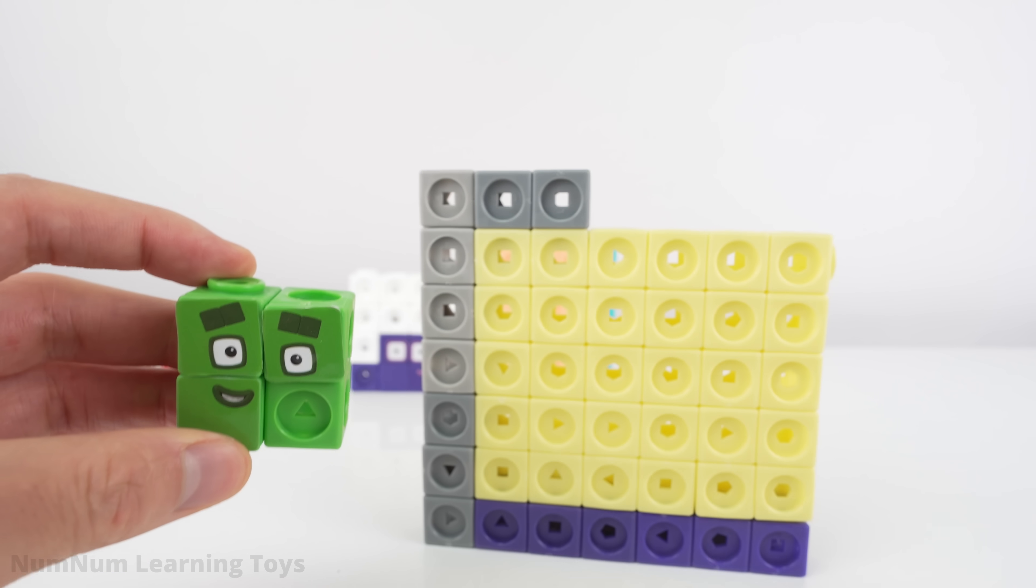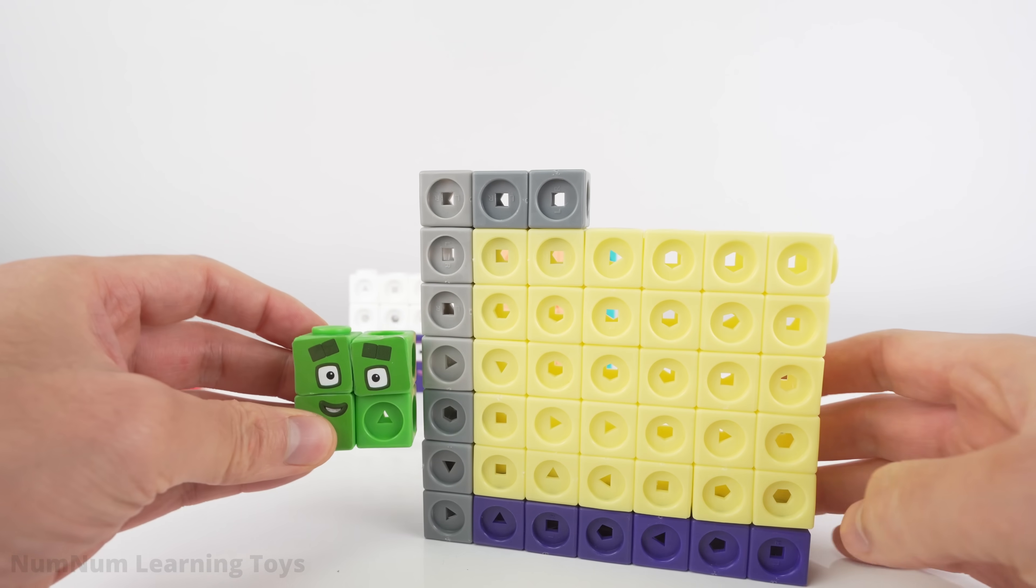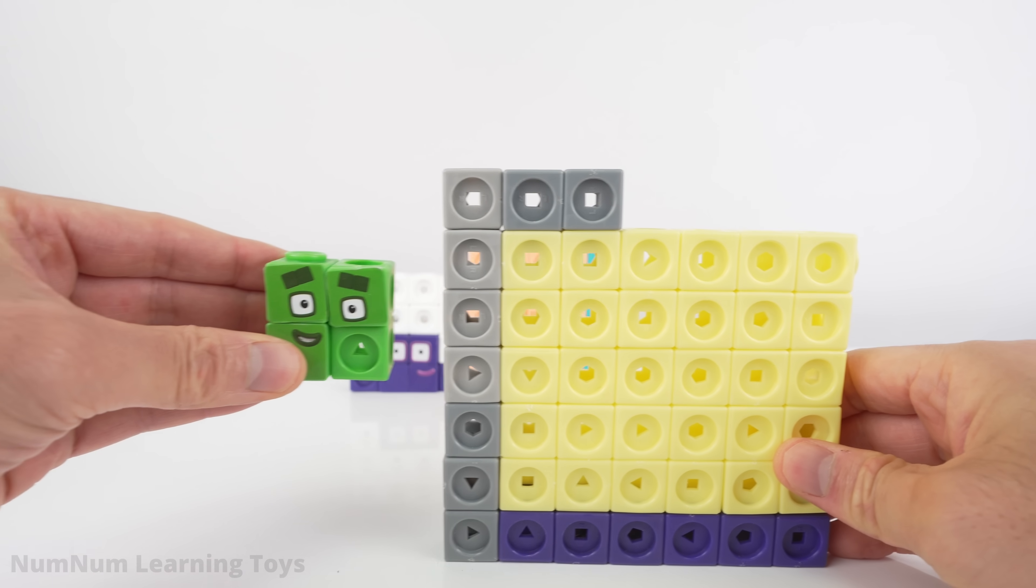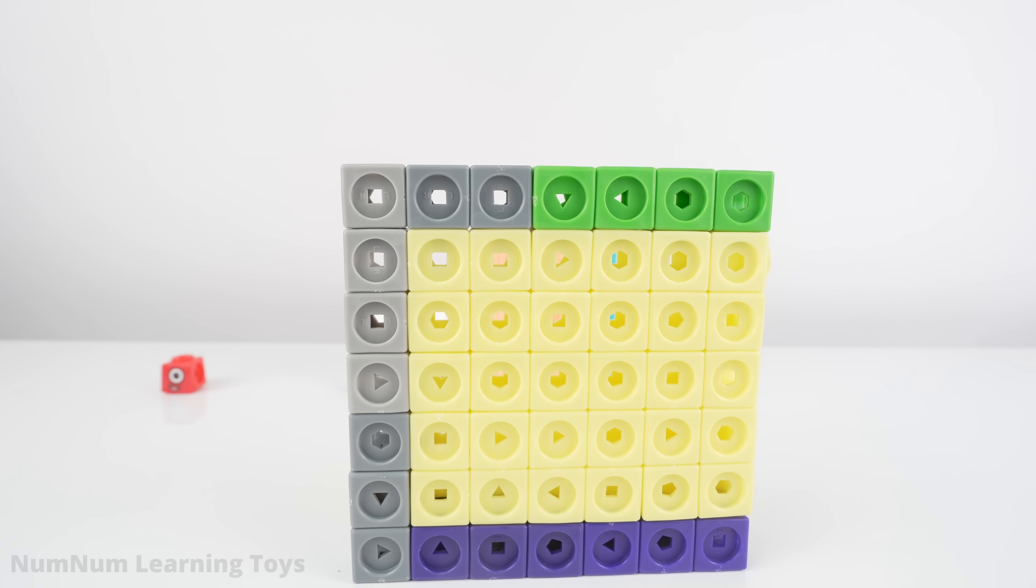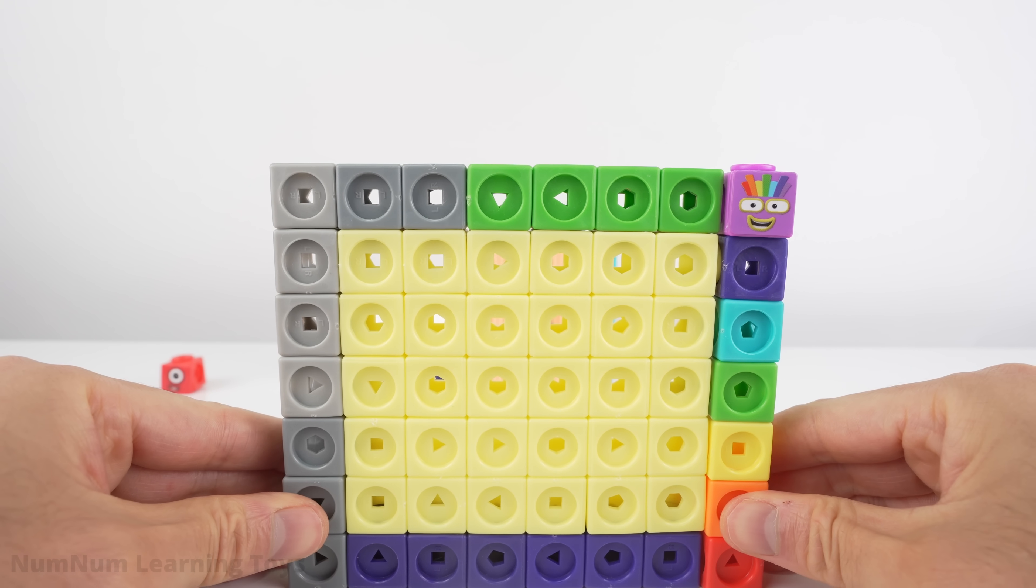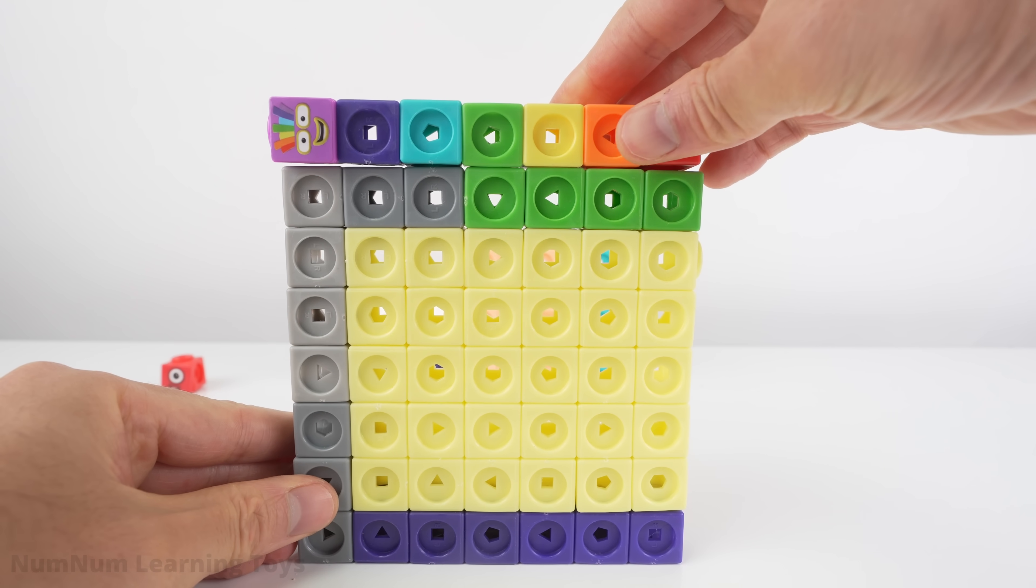Now let's add four to forty-five to make a square. Forty-five plus four is forty-nine. Forty-nine is a seven by seven square.